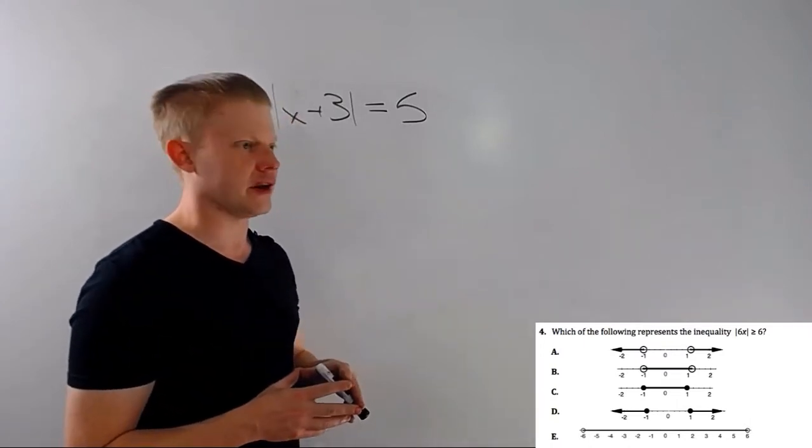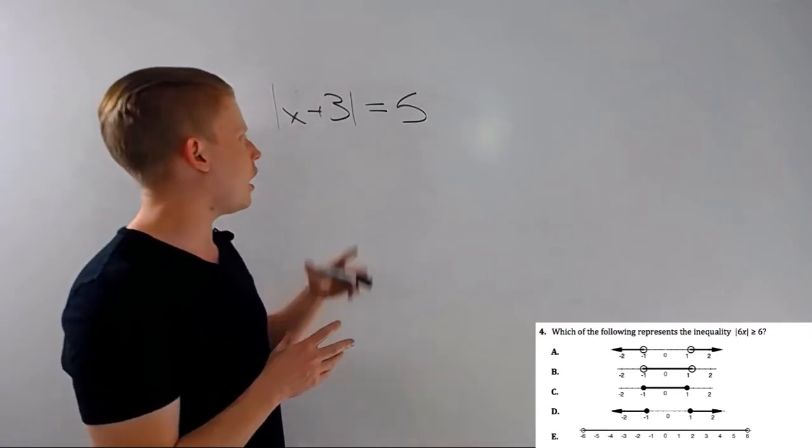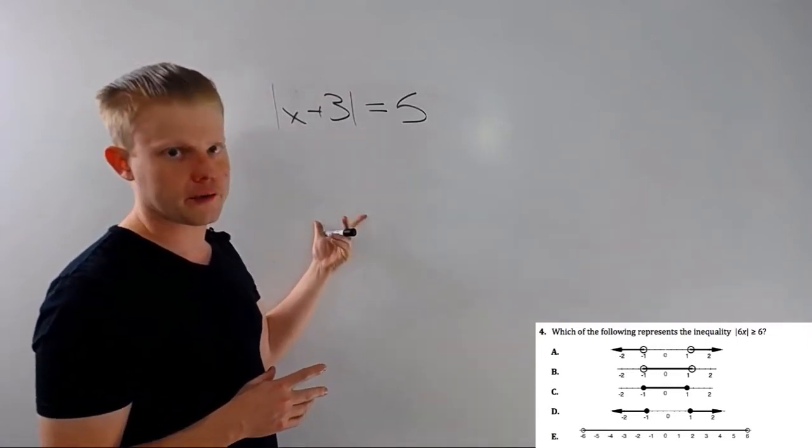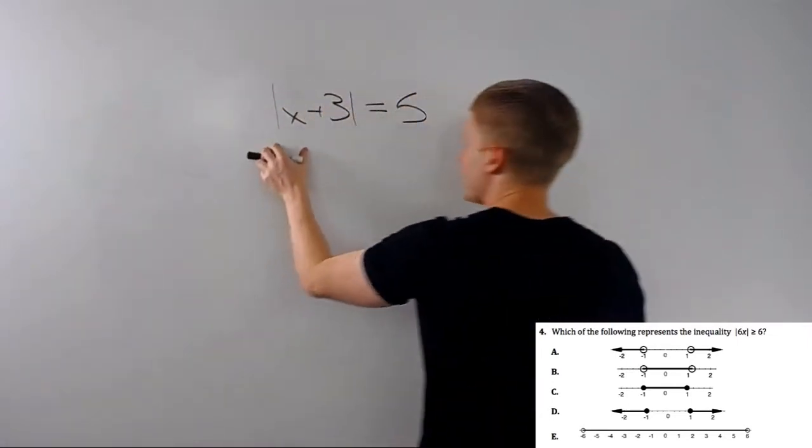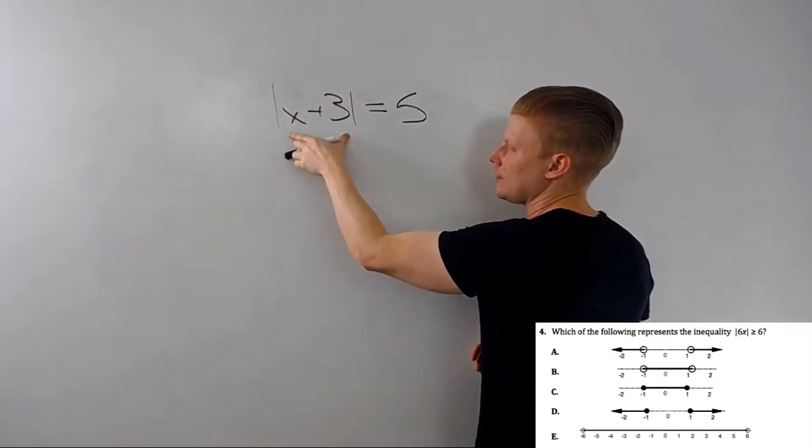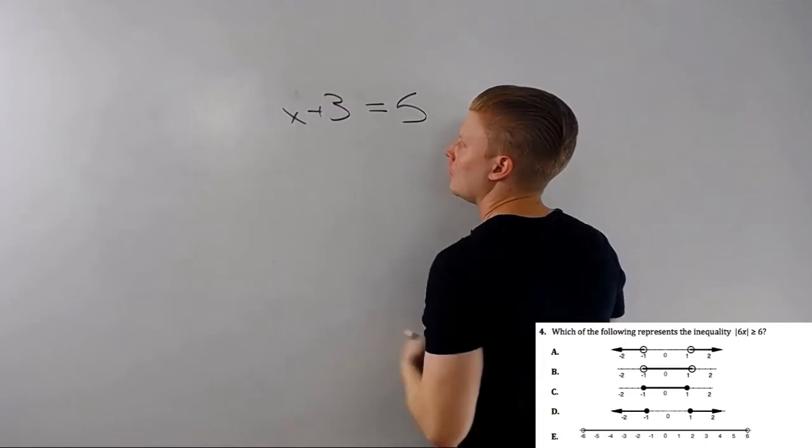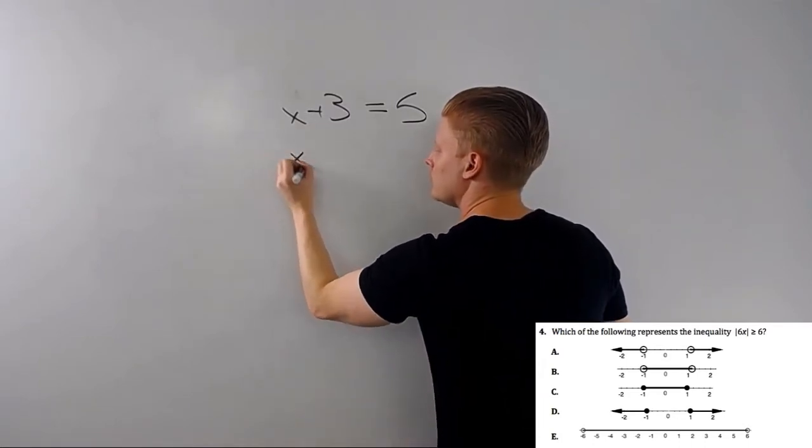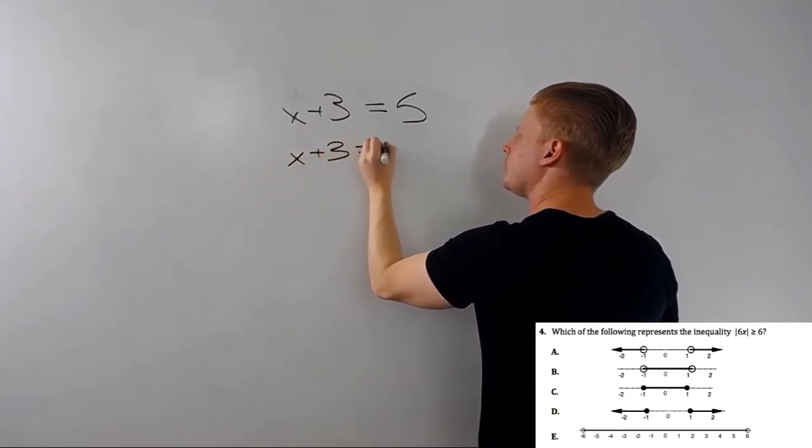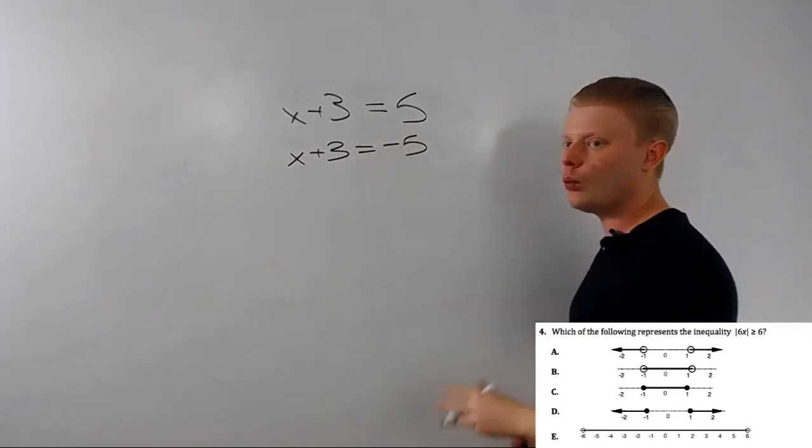So to solve this, I've got to get rid of these absolute value bars. Now the absolute value of x plus 3, this quantity is equal to 5. That means x plus 3 is either equal to 5 or x plus 3 is equal to negative 5, one or the other.